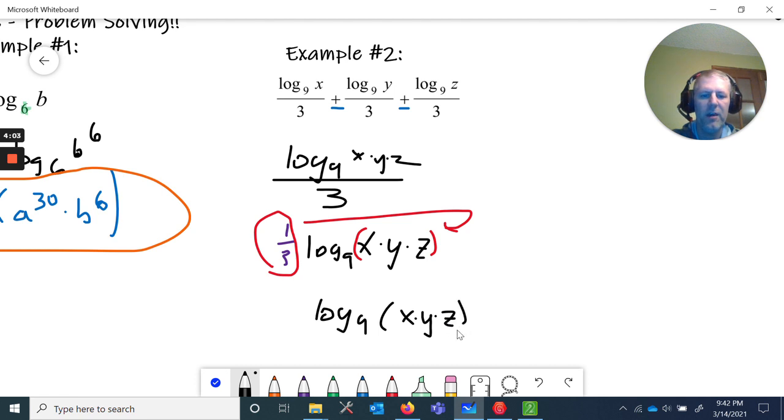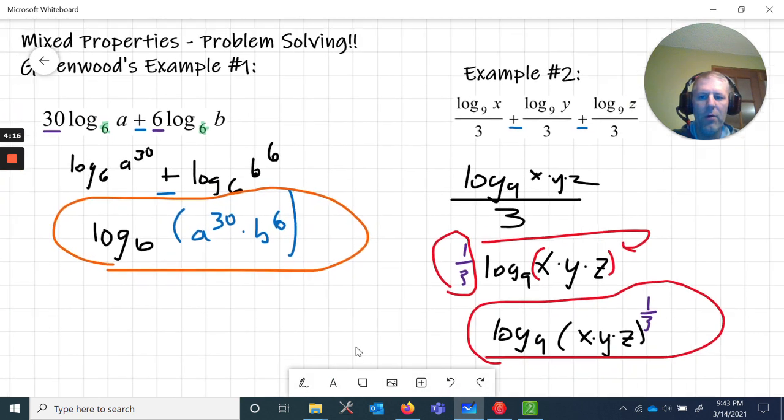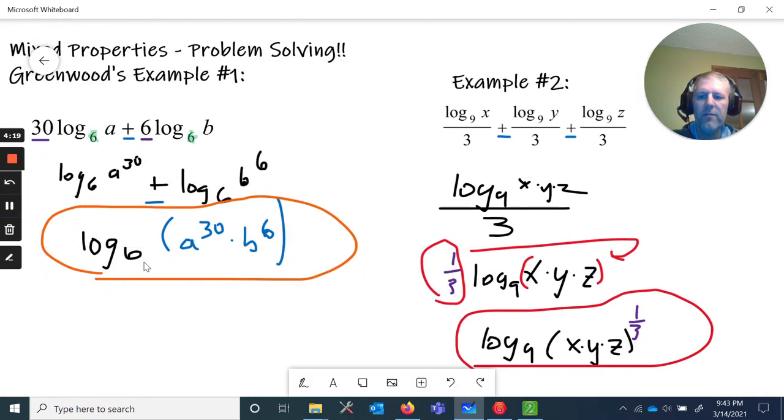The final thing here is going to be log base nine of parentheses x times y times z. I'm using dots for the multiplication but you don't have to write the dots in, because if we took xyz it's implied it's multiplication. Then we raise that whole thing, the x, the y, and z, to the one-third power.